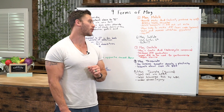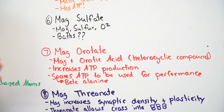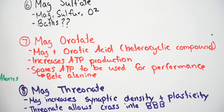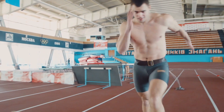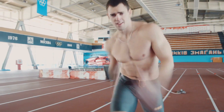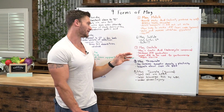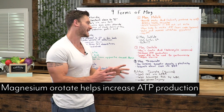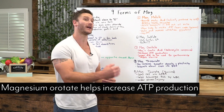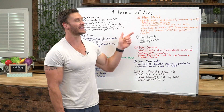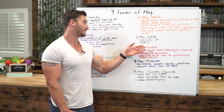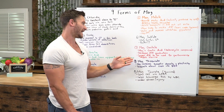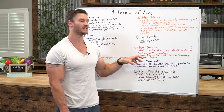Then we have magnesium orotate. This one's really good if you're pushing your body to a limit — like you're a high-powered athlete doing a lot of high-intensity work. Mag malate is good too, but mag orotate will help you out here as well. It's magnesium plus orotic acid — a heterocyclic compound. Basically what it does is it helps the body produce more ATP. Whereas mag malate helps support the natural ATP production that's happening, mag orotate can actually increase production and increase your performance.